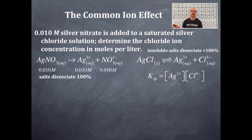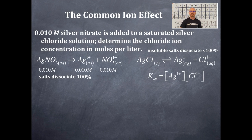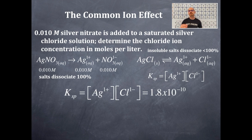Find the table of solubility product constants — look it up online or in your textbook — and find the Ksp value for silver chloride. Go ahead and pause the video to look that up. The Ksp value for AgCl from the solubility product constant table at 25°C — all these problems assume 25°C — is 1.8 × 10⁻¹⁰. We substitute that value in for Ksp.